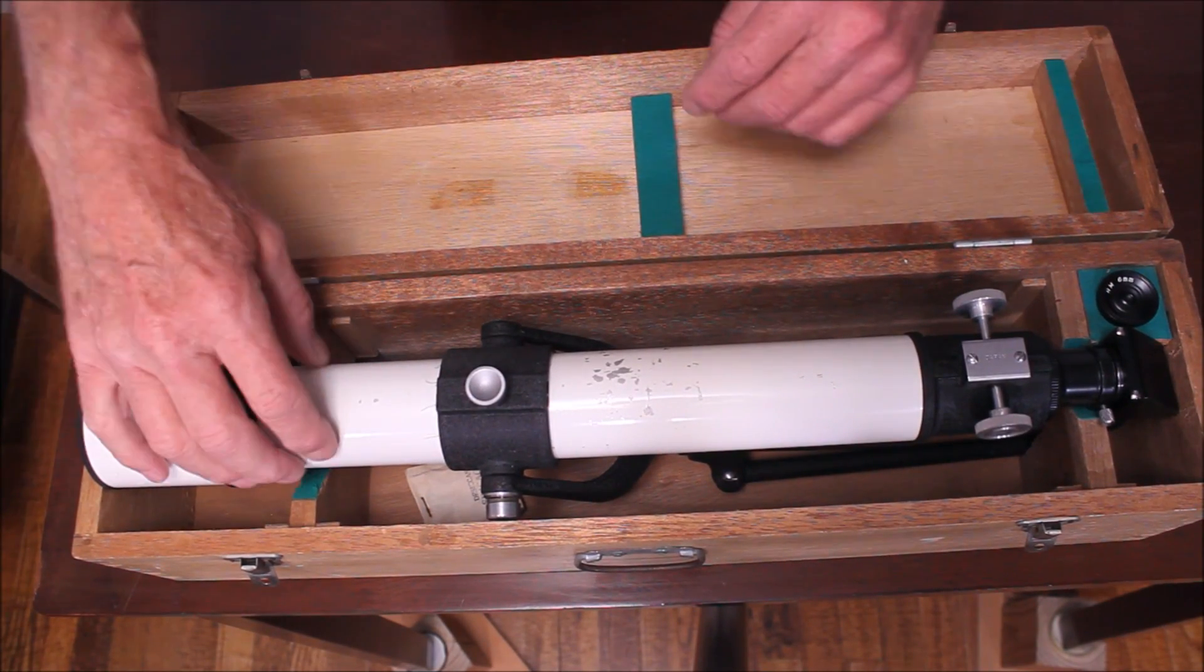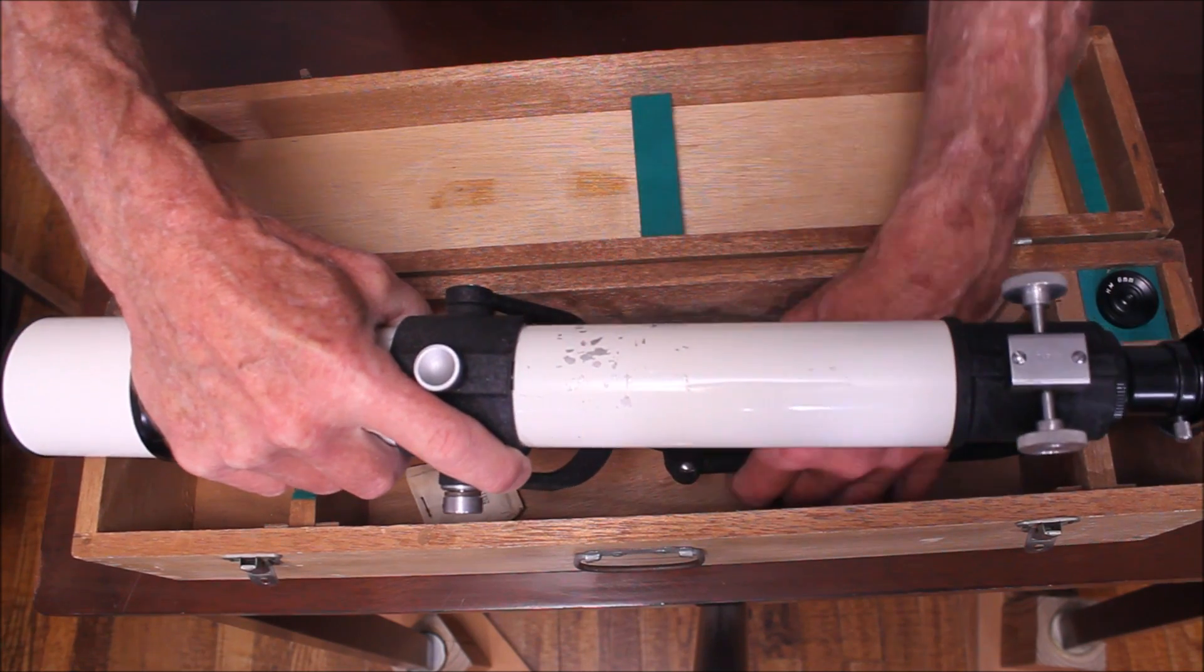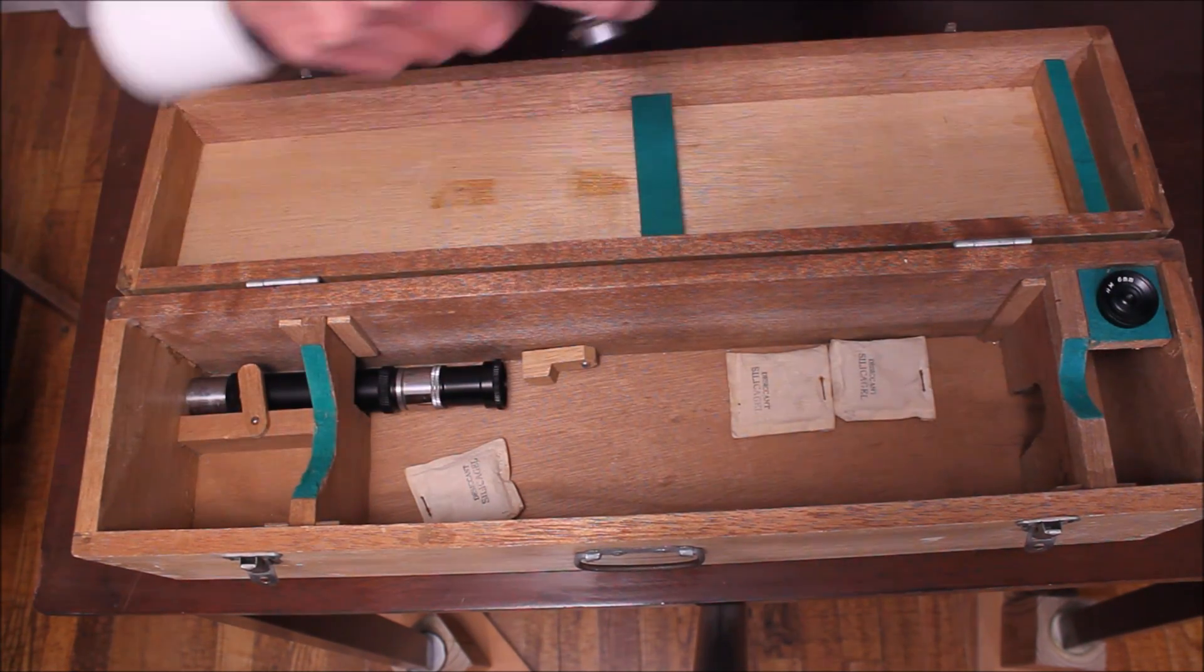Here's how the Altascope stores in its box. There's a place for the legs. Everything folds up inside there.